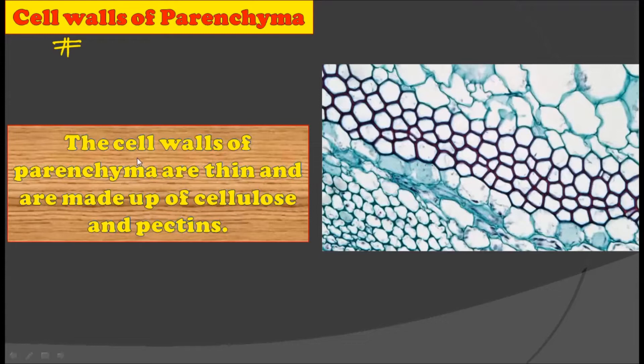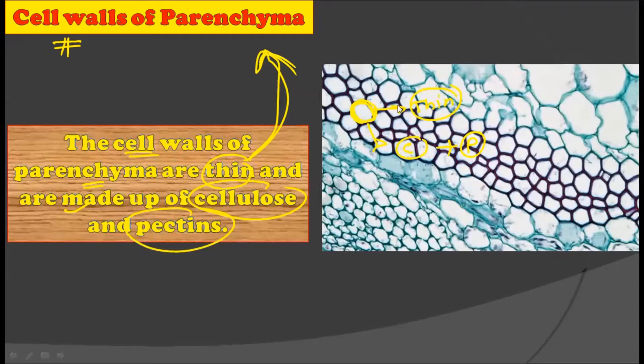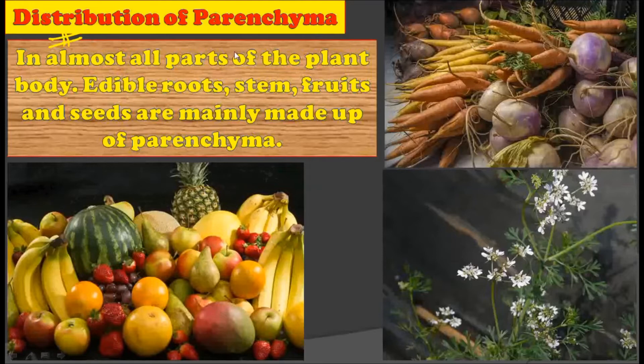Now let us consider the cell wall of parenchyma. The cell wall of parenchyma cells is thin and it is made up of cellulose and pectin. Every plant cell has a cell wall, and parenchyma cells are no exception. The cell wall is thin in nature and is made up of cellulose plus pectin. Now let us focus on the distribution of parenchyma in plants — parenchyma tissue is found in almost all parts of the plant body.